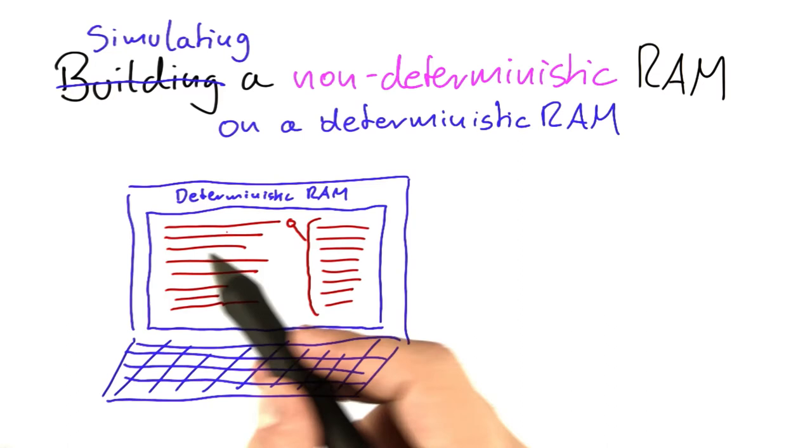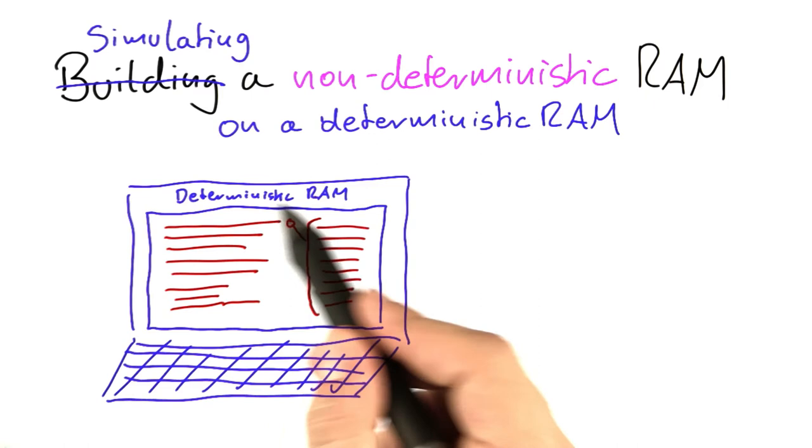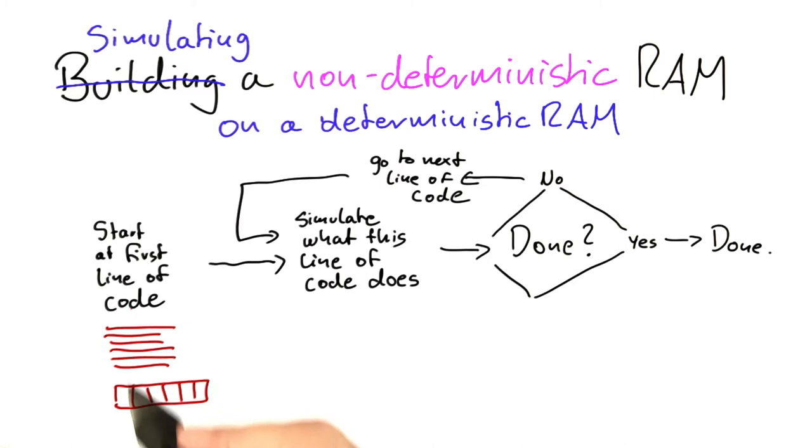And this program is basically going through your code and simulating what your code is doing. And this program here, which would be the simulator, is basically looking at the code and simulating what this code would actually do without running it directly on the machine.